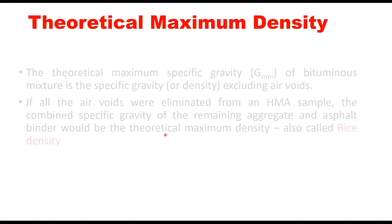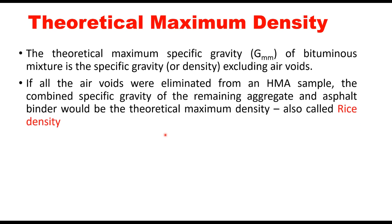The theoretical maximum density or GMM of a bituminous mixture is the specific gravity or density excluding air voids. If all air voids are eliminated from an HMA sample, the combined specific gravity of the remaining aggregate and asphalt binder would be the theoretical maximum density, also called Rice density.